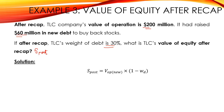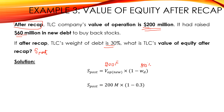We know that the formula for S post is the new value of operations — V op new — which is 200 million, because it is after the recapitalization. So S post equals 200 million times (1 minus W_d), where W_d is the weight of debt, which is 30 percent. Therefore S post equals 200 million times (1 minus 0.3), giving S post equal to 140 million dollars.